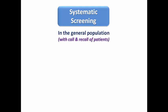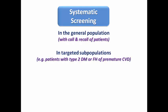The second type is systematic screening. From its name, we can deduce its meaning. It can be performed in the general population with call and recall of patients, or in targeted subpopulations such as diabetic patients or those with a family history of premature cardiovascular disease. In this type, I don't wait for the population to come to the healthcare facility — I call them to screen for risk factors and perform risk stratification.